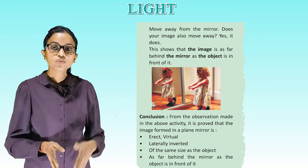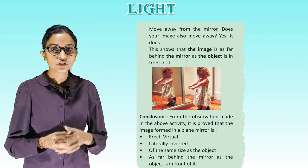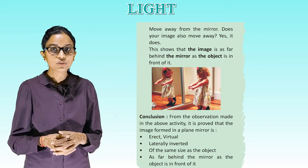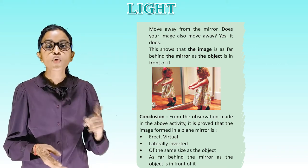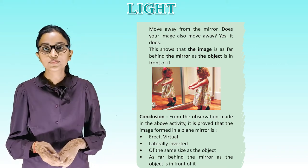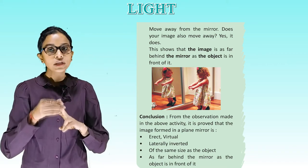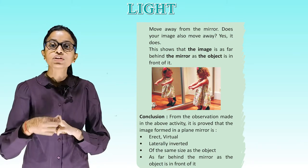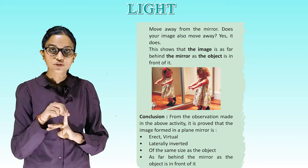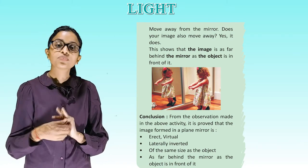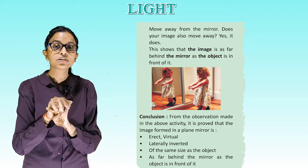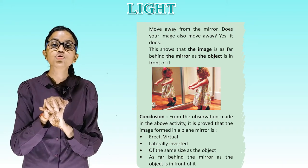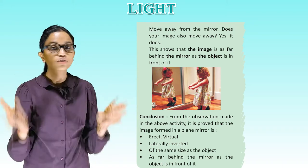Conclusion: from the observations made in the above activity, it is proved that the image formed in a plane mirror is erect, virtual, laterally inverted, of the same size as the object, and as far behind the mirror as the object is in front of it.